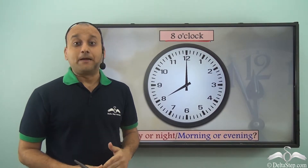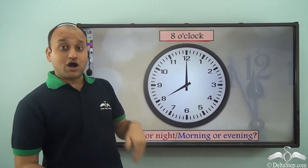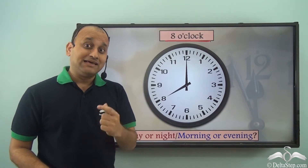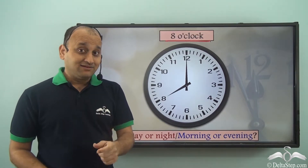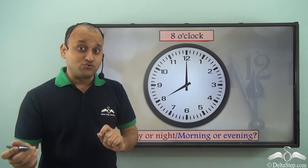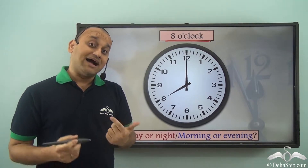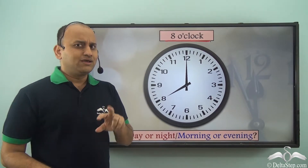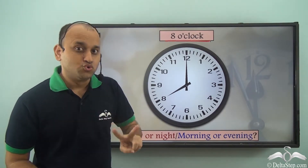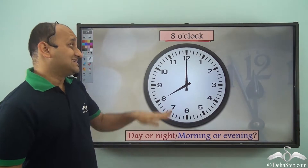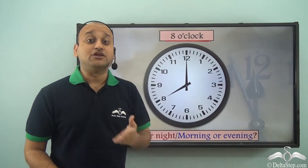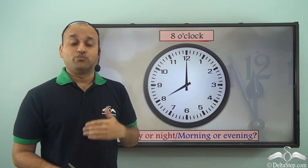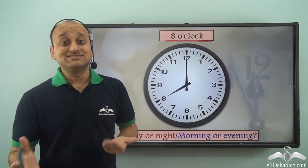You can't tell, because 8 o'clock comes two times in the day. In the morning when you get up, it is 8 o'clock when you leave for school, and again in the evening it is 8 o'clock. So just saying 8 o'clock will not define what time of the day it is — whether it is day or whether it is night.